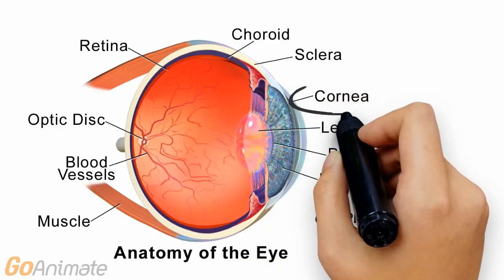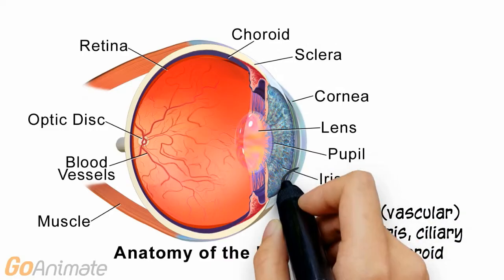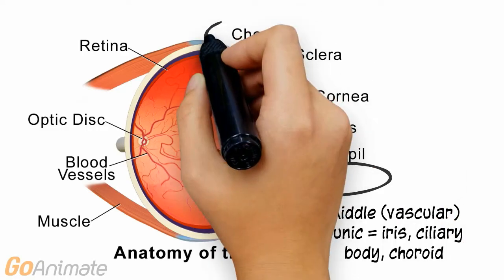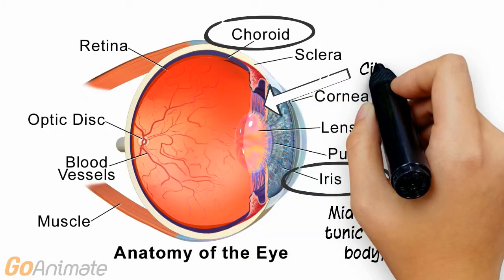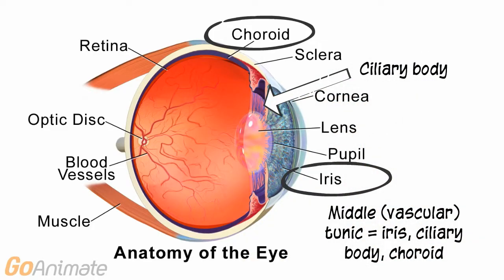The structure of the eye can be described in three layers. The outer or fibrous tunic consists of the transparent cornea and opaque sclera. The middle or vascular tunic consists of the iris, ciliary body, and choroid.